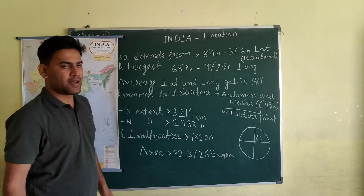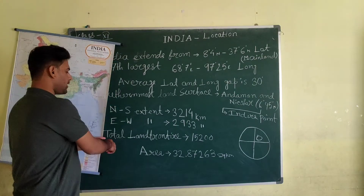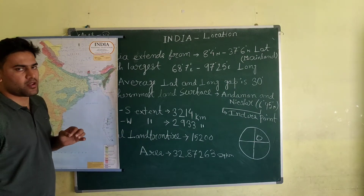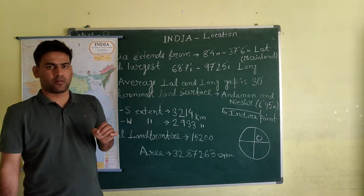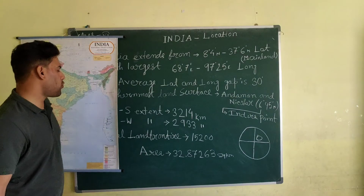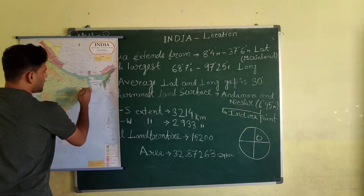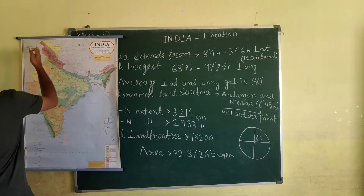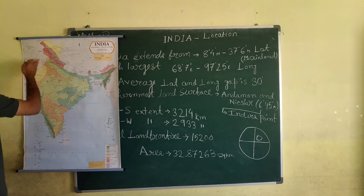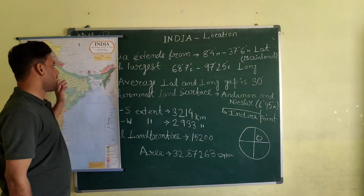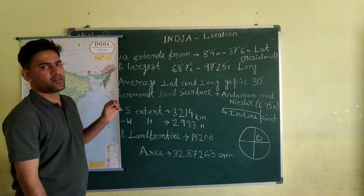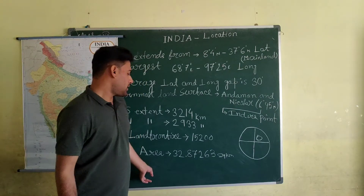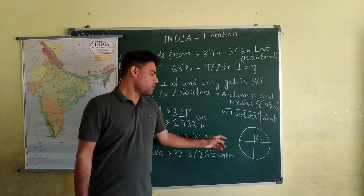The total land frontier shared with other countries — land frontier means the border lines between two countries — is about 15,200 km. India shares borders with Bangladesh, Nepal, Bhutan, China, Afghanistan, and Pakistan. The total area of India is about 3,287,260 km².